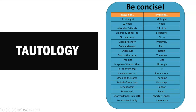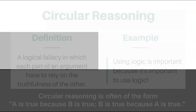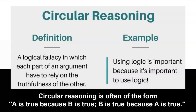Circular reasoning is an argument defect where the argument fails to persuade because there's no reason to accept the premises unless you already believe the conclusion, or the premises provide no independent ground or evidence for the conclusion. This is closely related to tautology.